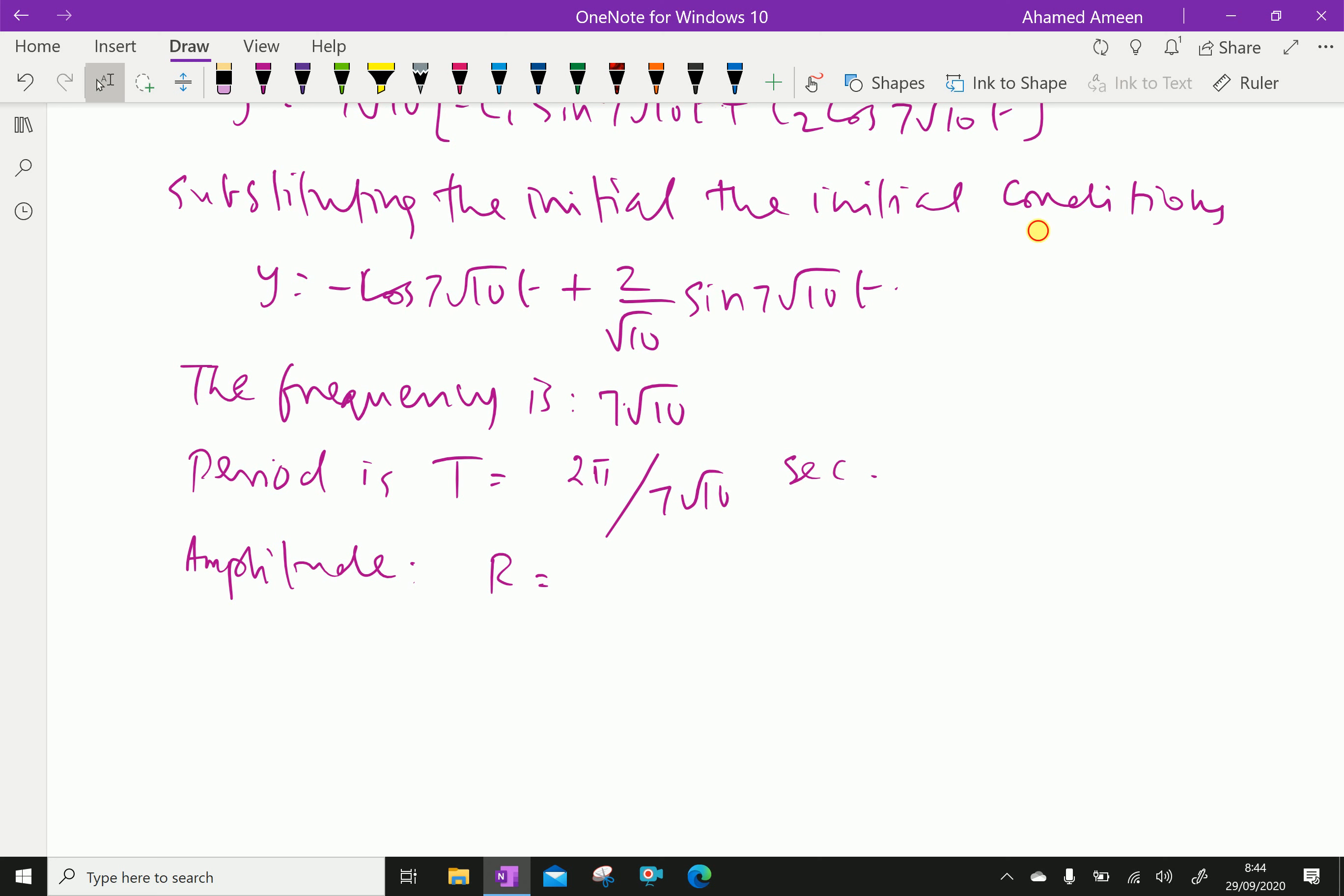For amplitude, it is square root of C1 squared plus C2 squared, which equals minus 1 squared plus 2 by root 10 squared, which gives root of 7 by 5 centimeters.